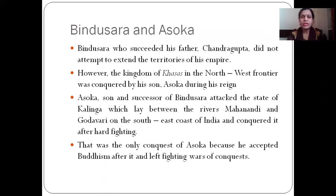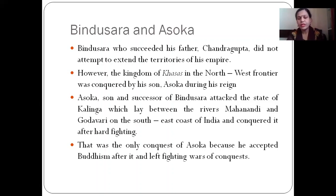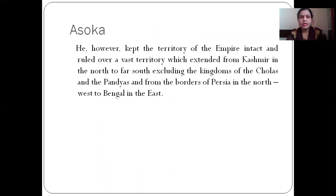After Chandragupta, Bindusara succeeded his father but did not attempt to extend the territories of the empire. However, the kingdom of Kasa in the north-west frontier was conquered by his son Ashoka during his reign. Ashoka attacked the state of Kalinga, which lay between the rivers Mahanadi and Godavari on the south-east coast of India, and conquered it after hard fighting. That was Ashoka's only conquest, as he accepted Buddhism afterward and gave up wars of conquest. After the Kalinga war of 261 BC, Ashoka ruled a vast territory extending from Kashmir in the north to the south — excluding the Cholas and Pandyas — and from the borders of Persia in the north-west to Bengal in the east.